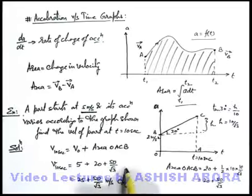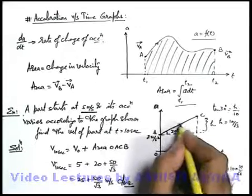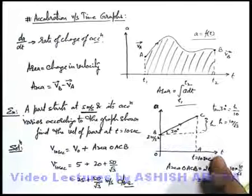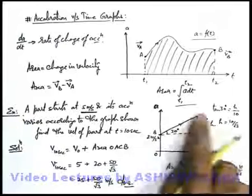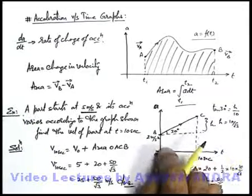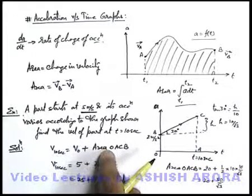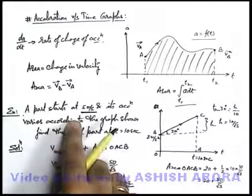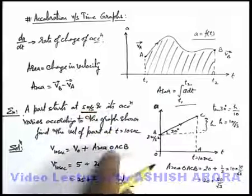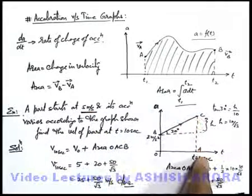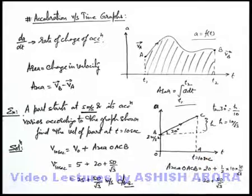So you can say in such questions, whenever we are given with acceleration time graphs, we can find out the area of acceleration time graphs. And using this area we can find out the change in velocity. Like here what we have done in the initial velocity we have added the area which will give us the final velocity of particle at t equal to 10 seconds.